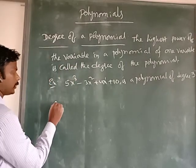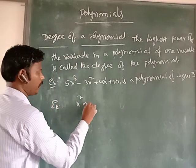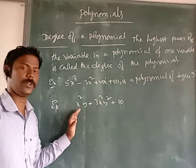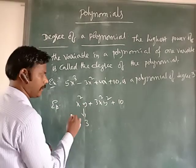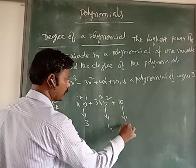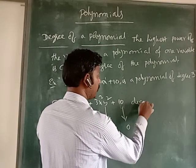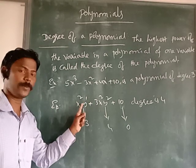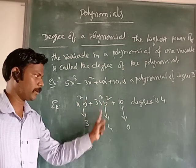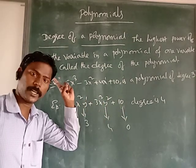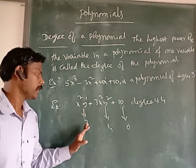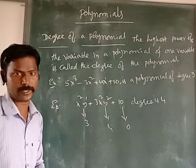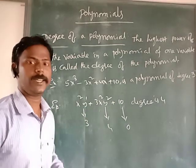What about two variables? For example: x²y + x²y² + 10. Here the degree of the first term x²y is 2+1 = 3, the degree of x²y² is 2+2 = 4, and the constant 10 has degree 0. So the degrees of the terms are 3, 4, and 0. When two or more variables are given, find the total degree of each term. Among those, the highest degree is the degree of the entire polynomial.